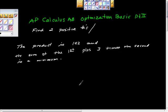We're asked to find two positive numbers such that the product of those two numbers is 192, and the sum of the first plus three times the second is a minimum. So key stuff here, and it's going to work out for all optimization problems, is that you're going to end up with a primary and secondary equation.